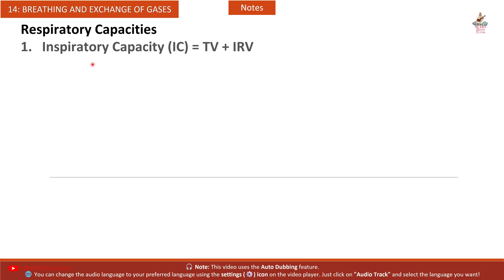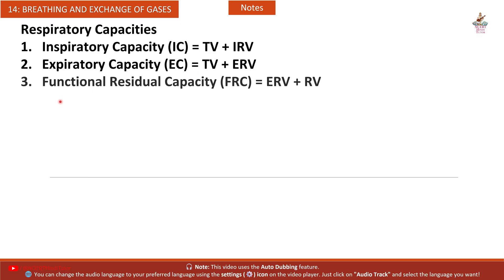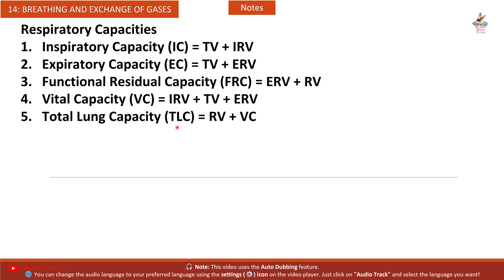Respiratory Capacities: First, Inspiratory Capacity (IC) = TV + IRV. Second, Expiratory Capacity (EC) = TV + ERV. Third, Functional Residual Capacity (FRC) = ERV + RV. Fourth, Vital Capacity (VC) = IRV + TV + ERV. Fifth, Total Lung Capacity (TLC) = RV + VC.